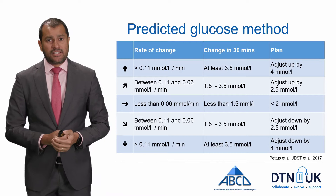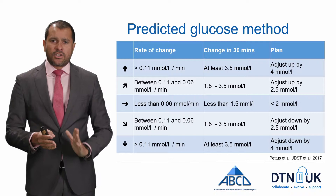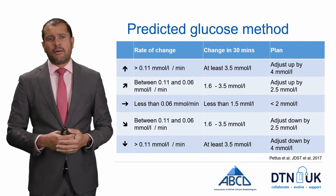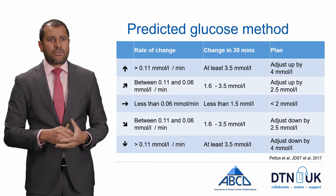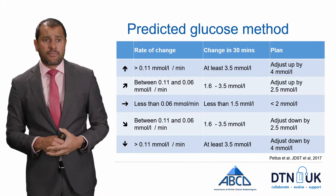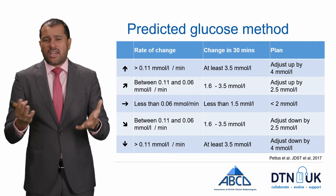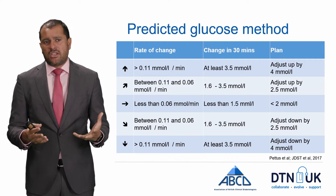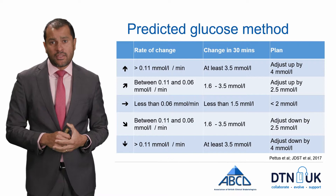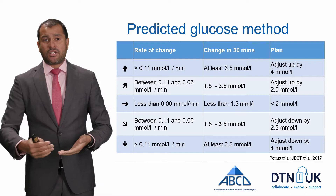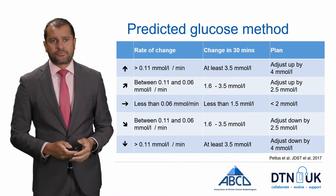The second method is the predicted glucose method: if you've got an arrow, predict where your blood sugar will be in about 30 minutes when the insulin starts working, and use that predicted glucose to calculate your dose instead of the current reading. Straight up arrow: add 4–5 mmol to current glucose. Oblique up arrow: add ~2.5 mmol. Flat arrow: use current glucose. Oblique down arrow: subtract ~2.5 mmol. Straight down arrow: subtract ~4 mmol.